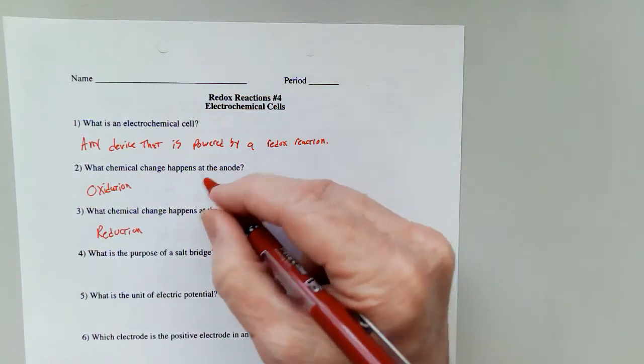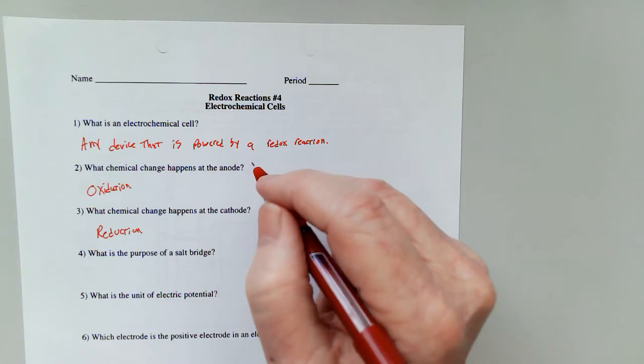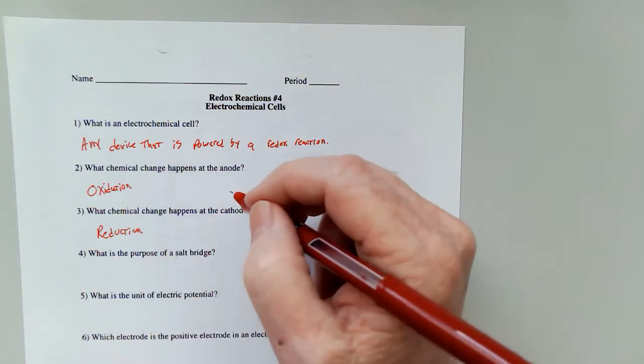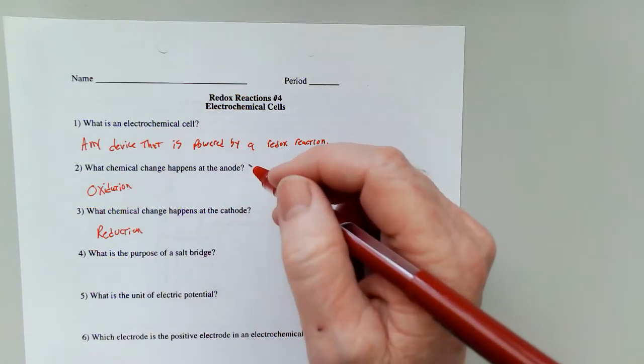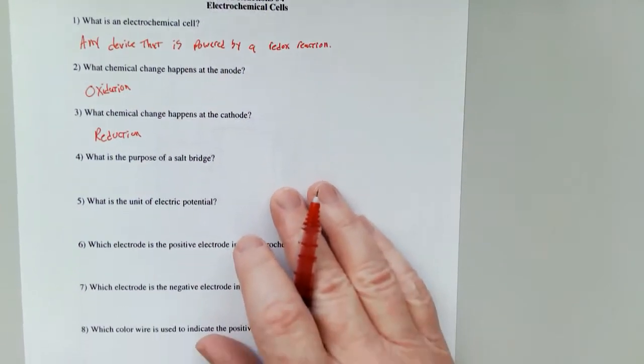Now you'll take note that anode and oxidation both begin with vowels, cathode and reduction both begin with consonants.